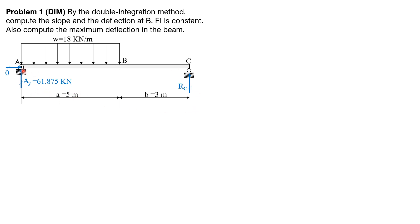Likewise, summation of moments about A equals zero, counterclockwise positive. R sub C times 8 equals 18 times 5 times 2.5. So R sub C equals 28.125 kilonewtons.